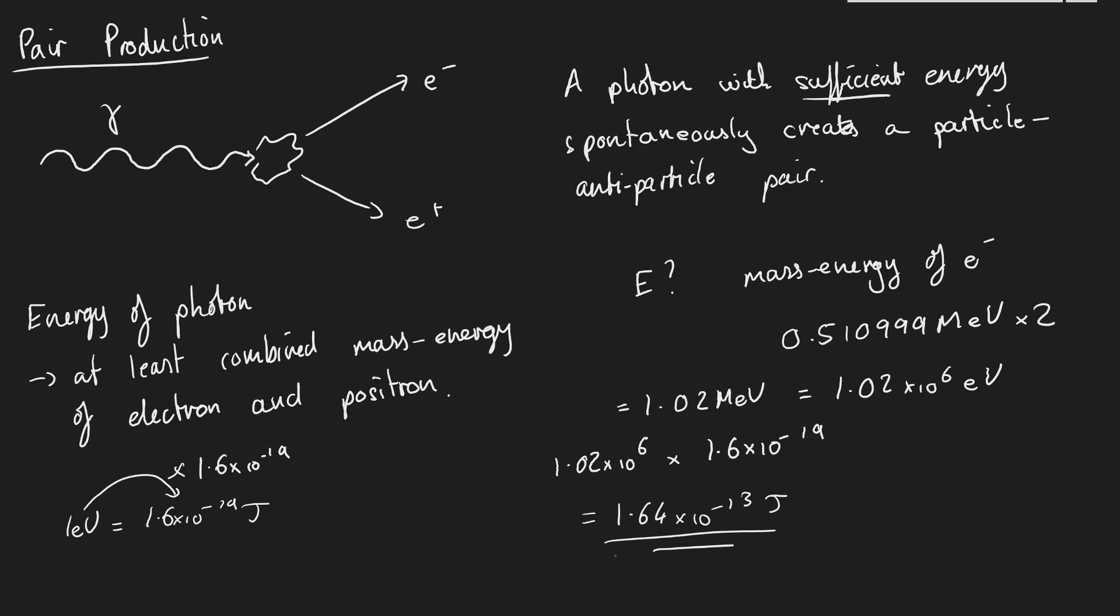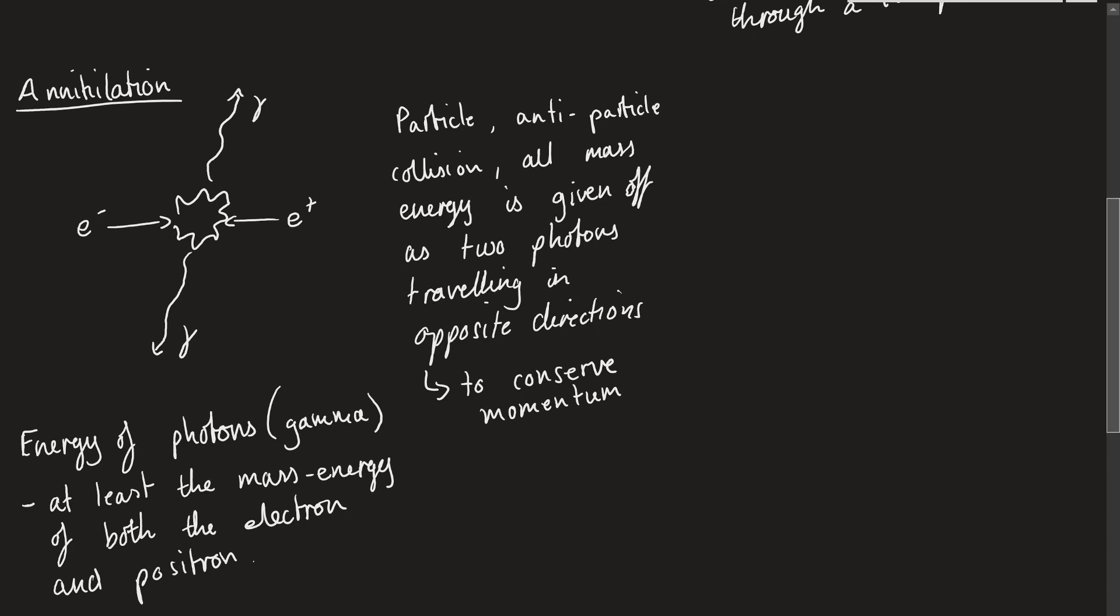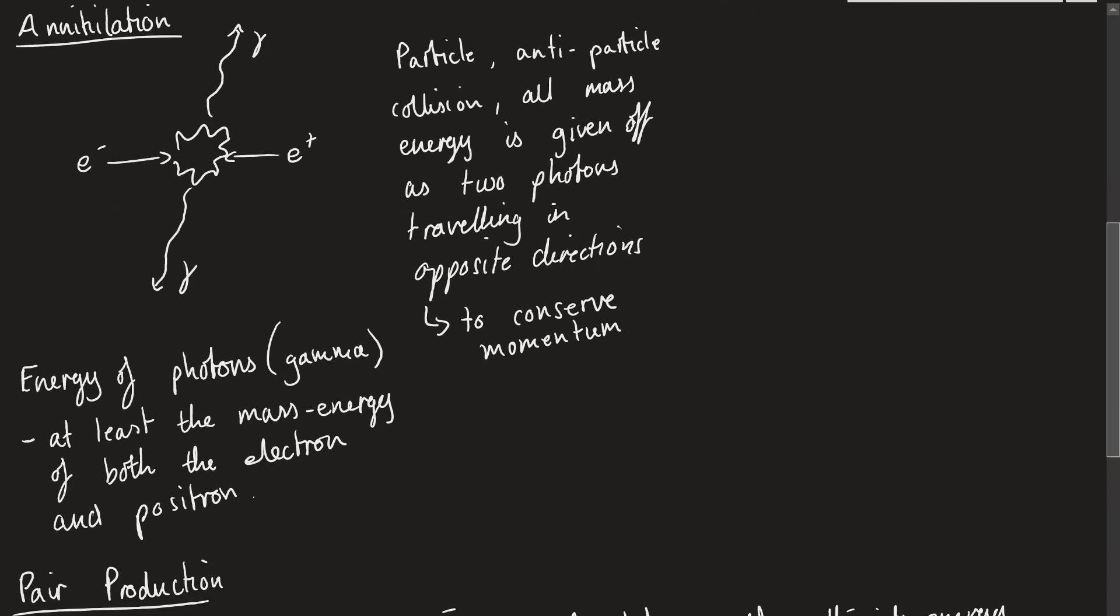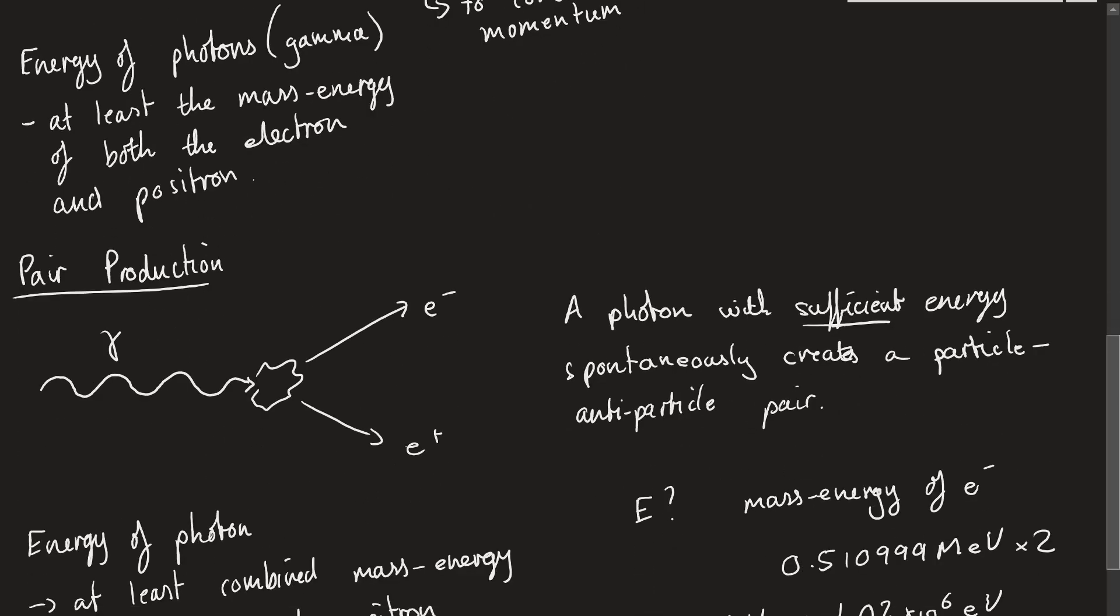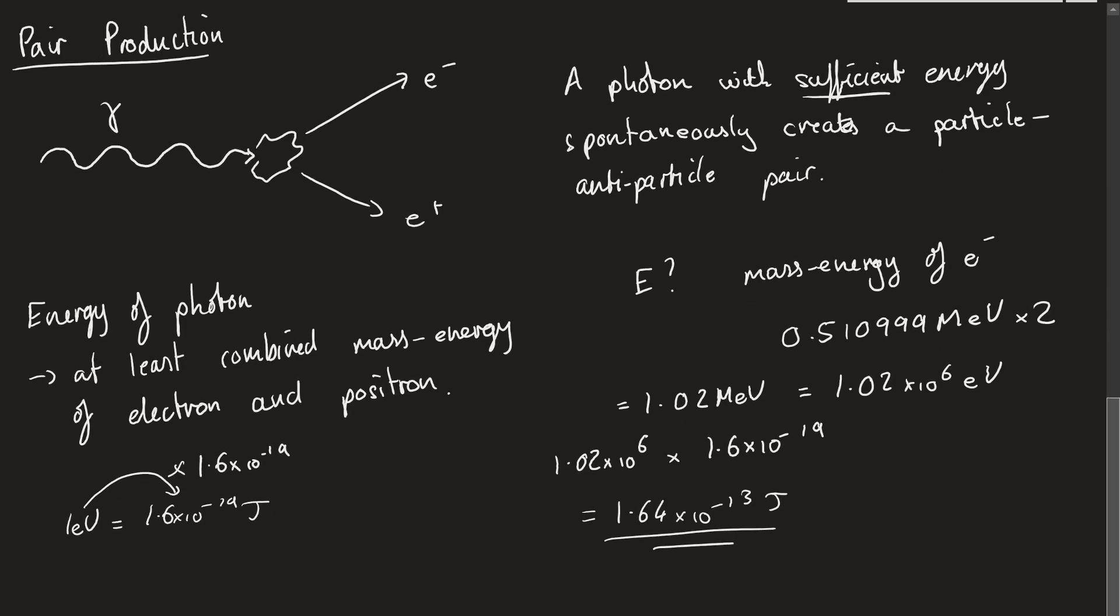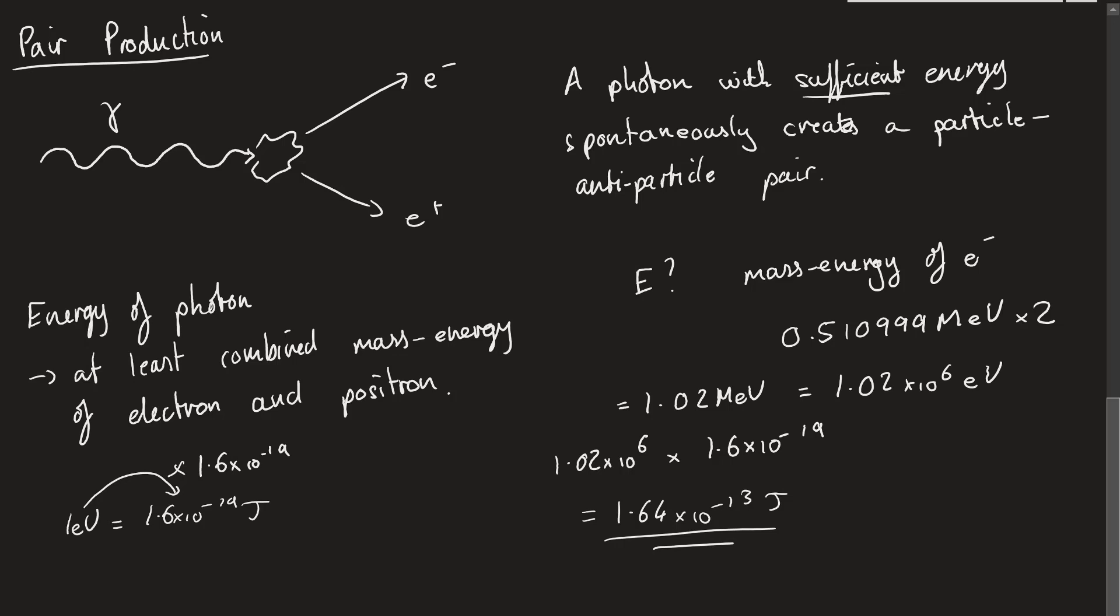Again, the keen eye amongst you might notice that if we've got a pair production and then we're releasing an electron and a positron and they're close together, they're probably going to go back and annihilate each other, which you would be right. Most times we have this pair production, it's followed by annihilation pretty quickly. But they are pretty useful for many things.